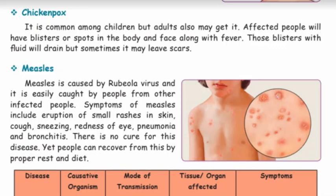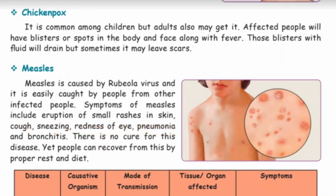Measles is caused by rubeola virus and it is easily caught by people from other infected people. Symptoms of measles include eruption of small rashes on the skin, cough, sneezing, redness of the eye, pneumonia and bronchitis.